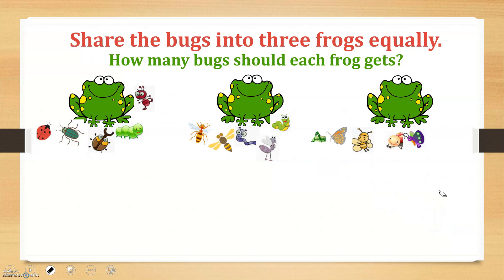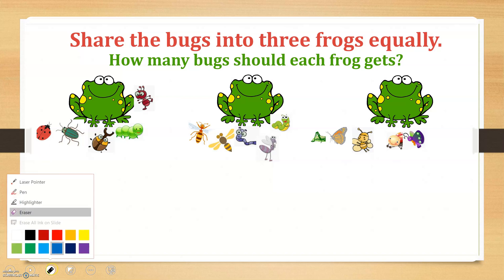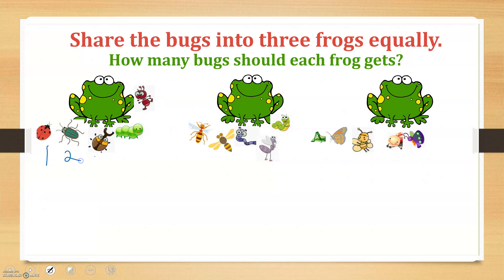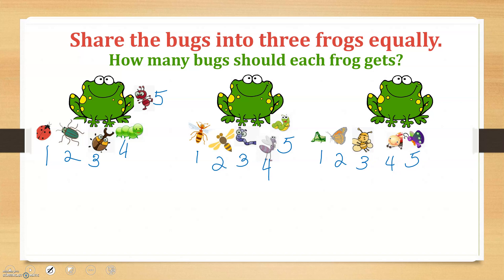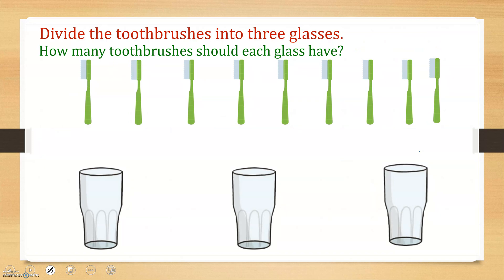Let's count how many bugs each frog gets: one, two, three, four, five — one, two, three, four, five — one, two, three, four, five. Each frog gets five bugs. Divide the toothbrushes into three glasses. How many toothbrushes should each glass have?